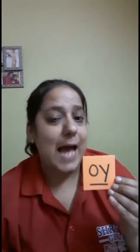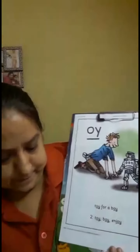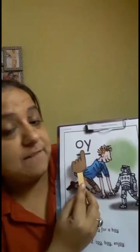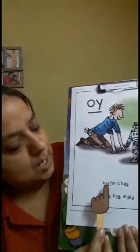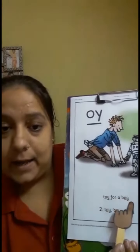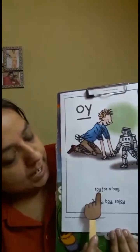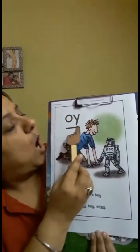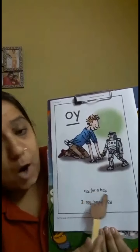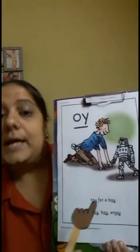The new sound has a picture to go with it. Let's see. When we look at OI, we say 'toy for a boy.' When we see these two letters OI, we say 'toy for a boy.' Are we all ready? Let's start. OI — toy for a boy. OI — toy for a boy.